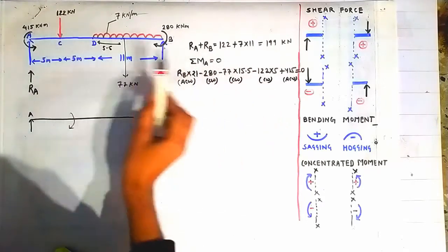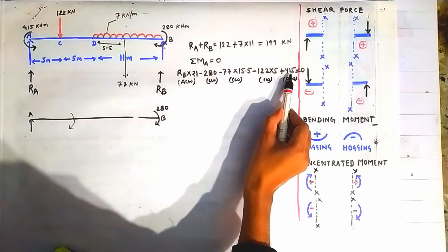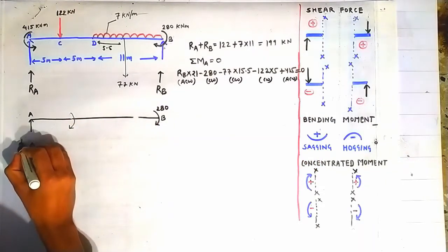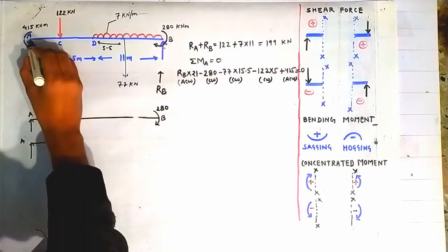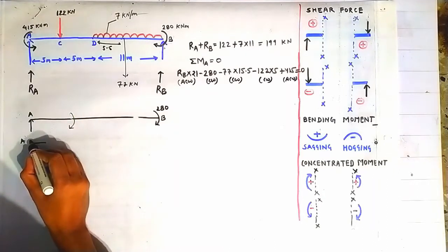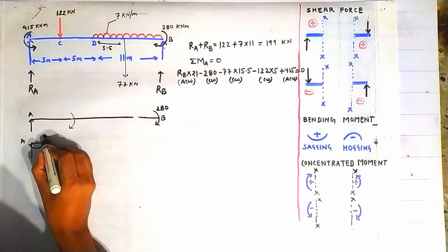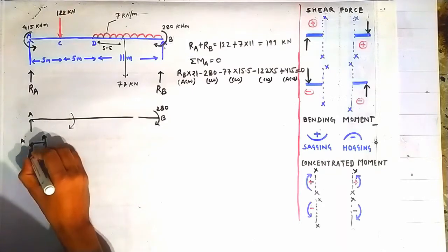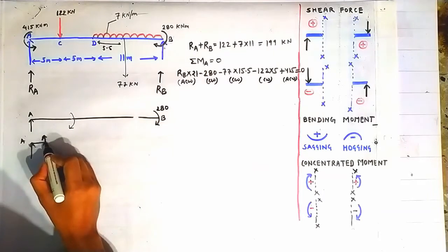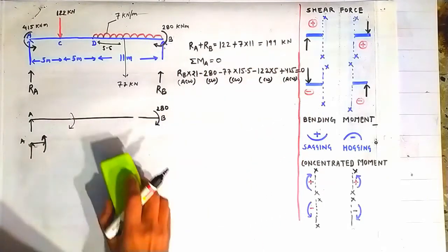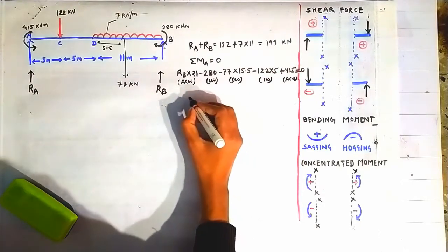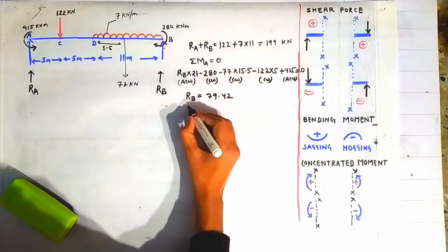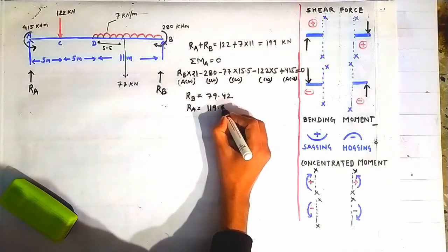Because of the point load there will be a clockwise rotation of magnitude 122 into its distance, and because of the 415 kN·m moment there will be a positive anticlockwise rotation. This moment of 450 is trying to rotate the small beam element in the anticlockwise direction, so it is taken as positive. Substituting all these values, RB comes out to be 79.42 kN and using the first equation RA comes out to be 119.58 kN.